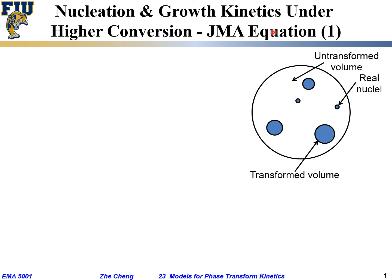Previously we talked about kinetics for low conversion conditions. Now we're going to talk about kinetics under higher conversion conditions, which gives us the so-called JMA equation.